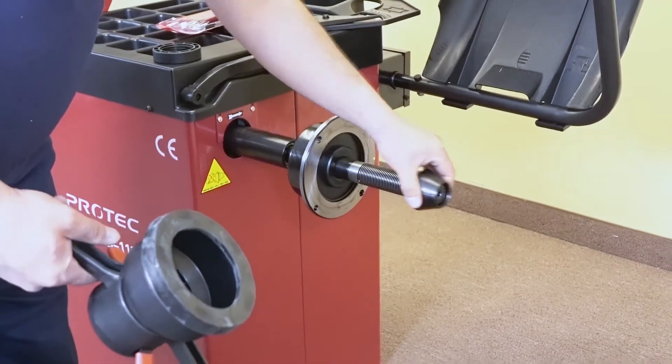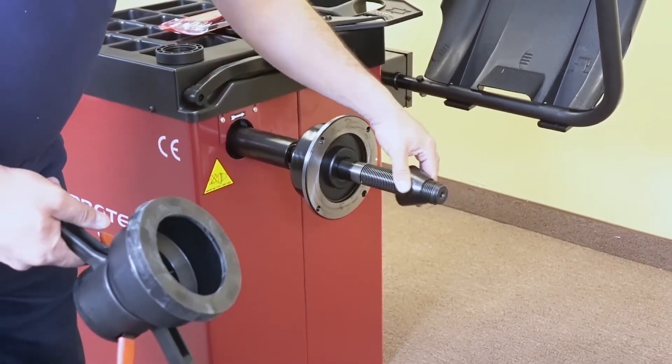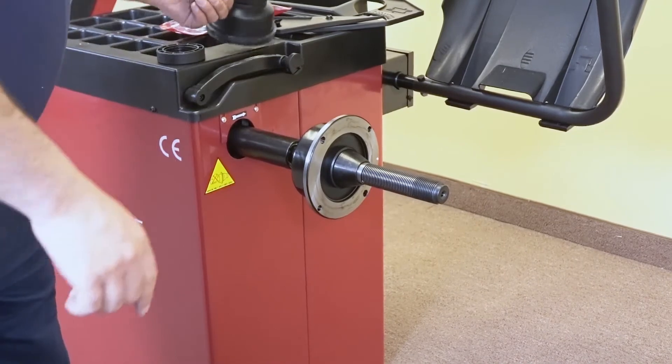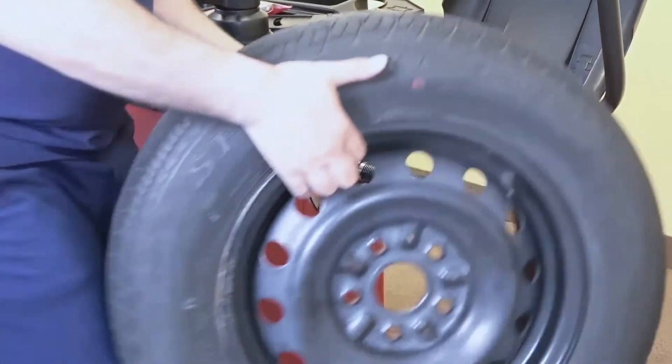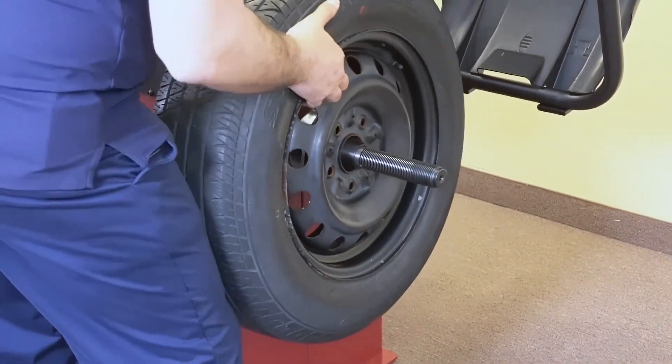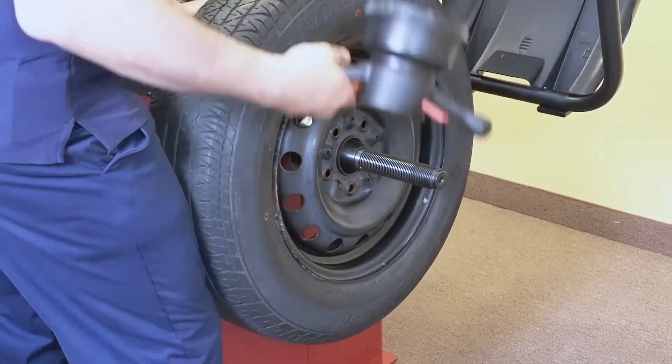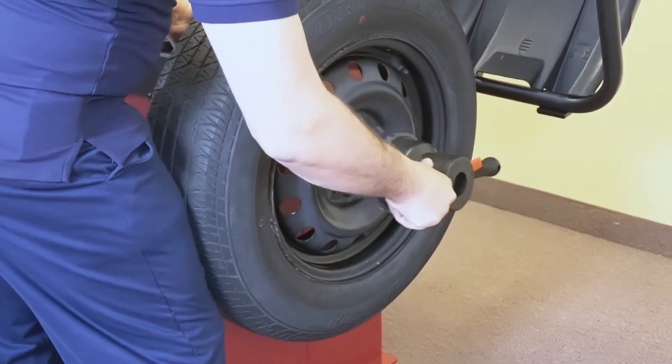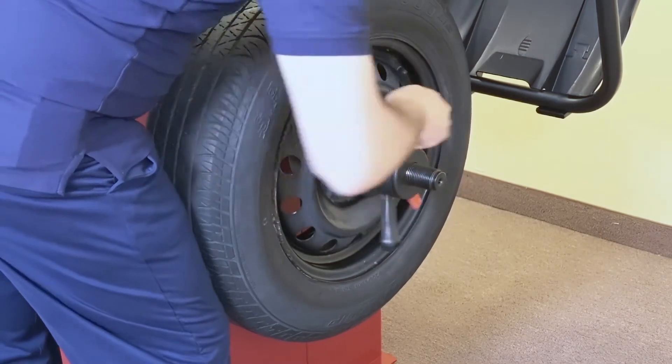To install the tire, the way we have it set up is you put the cone in first, install the tire, and you use the cup on the quick nut.